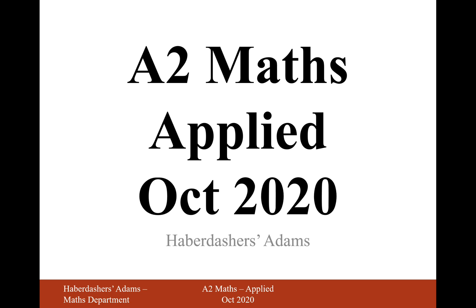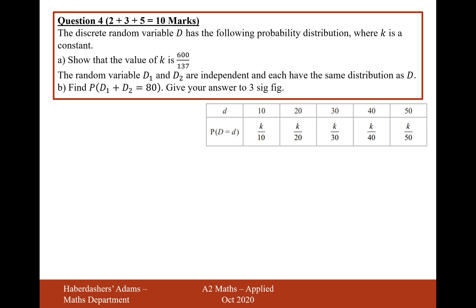Hello there and welcome to the October 2020 applied paper. Here we're looking at question 4. A discrete random variable D has the following probability distribution where k is constant. Show that the value of k is 600 over 131.